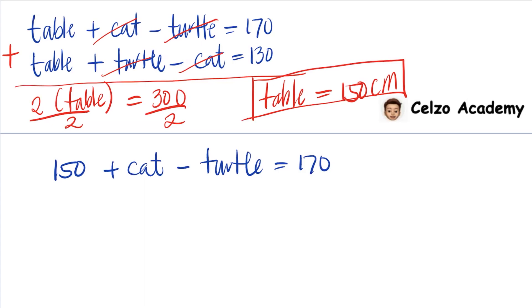Subtracting 150 from both sides, 150 minus 150 is 0. Then we have cat minus turtle is equal to 20. So this means that the cat is 20 centimeters taller than the turtle.